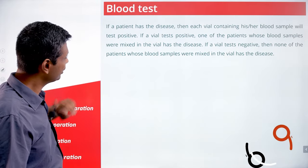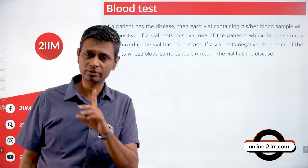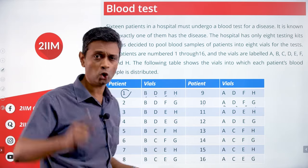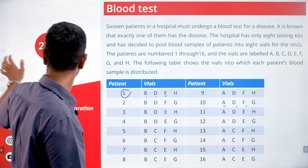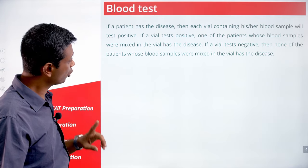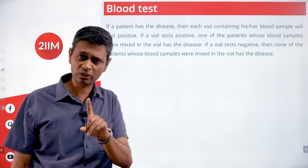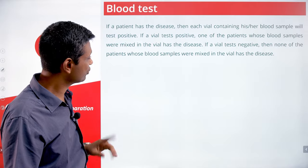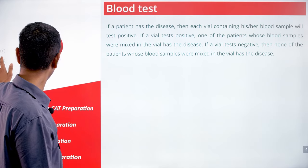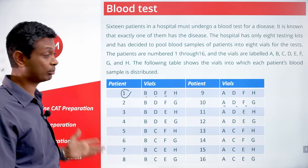If a patient has the disease, then each vial containing his or her blood sample will test positive. So if patient 1 has the disease, B, D, F, and H — all 4 will be positive. If a vial tests positive, one of the patients whose blood was mixed in has the disease. The negative test is more powerful than the positive test.